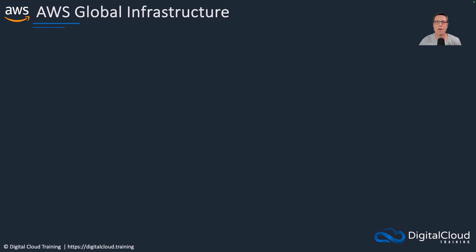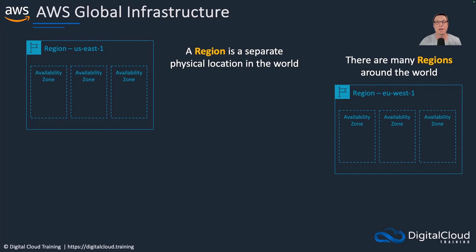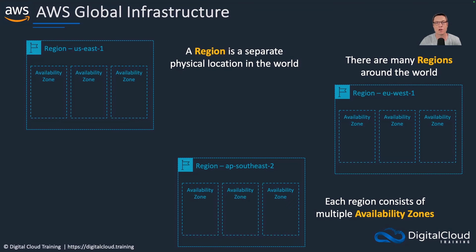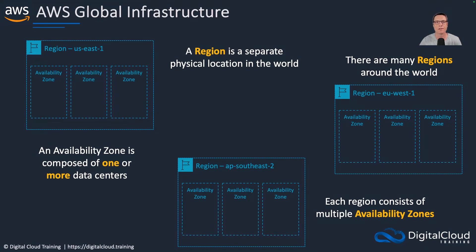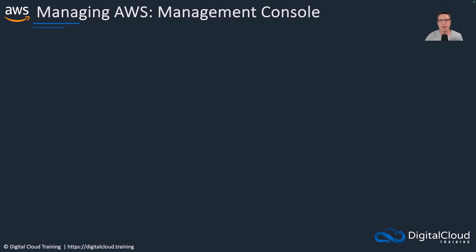Let's look at the global infrastructure at a high level. Around the world, AWS has regions — these are essentially separate physical locations in the world, and there are many of them. You can see here we've got US East, EU West, and AP Southeast. Each region consists of multiple availability zones; in the diagram here we have three availability zones in each region, though some regions will have more. An availability zone is essentially one or more separate data centers. All of these regions are connected with a network known as the AWS Global Network — a highly redundant network with very good bandwidth and low latency.